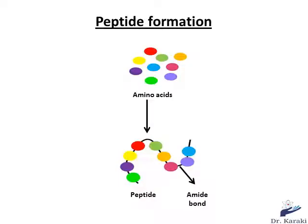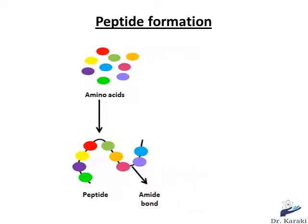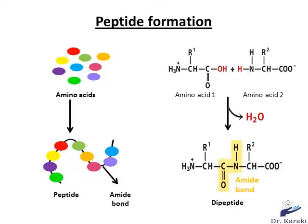A peptide is made of amino acids bound together by a peptide bond, also called an amide bond. For example, a dipeptide is made of two amino acids bound together with an amide bond C-O-N-H.